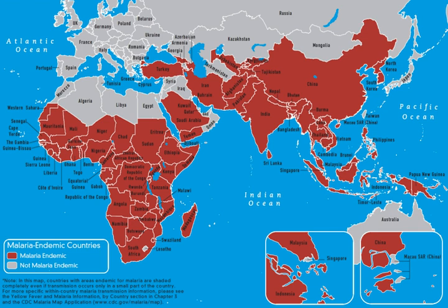Thalassemia is most prevalent in populations having Mediterranean ancestry, to the point that the disease's name is derived from the Greek thalassin. Tay-Sachs disease is an autosomal recessive disorder more frequent among Ashkenazi Jews than other Jewish groups and non-Jewish populations. Hereditary hemochromatosis is most common among persons of Northern European ancestry, in particular those of Celtic descent. Lactose intolerance affects as many as 25% of Europeans but up to 50–80% of Hispanics and Ashkenazi Jews, and nearly 100% of Native Americans.